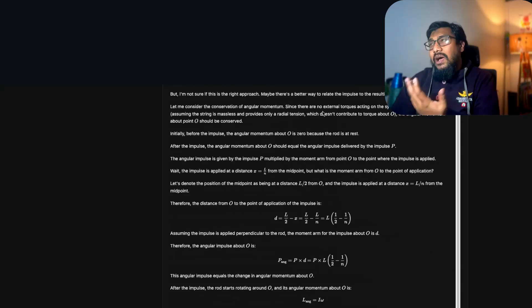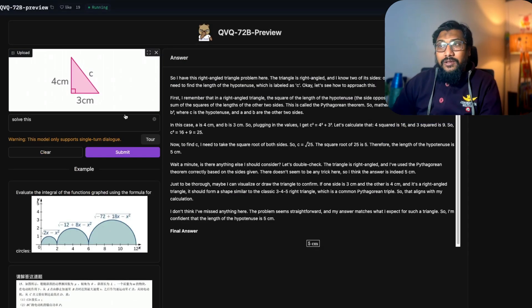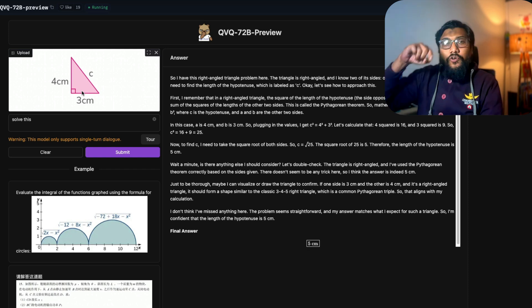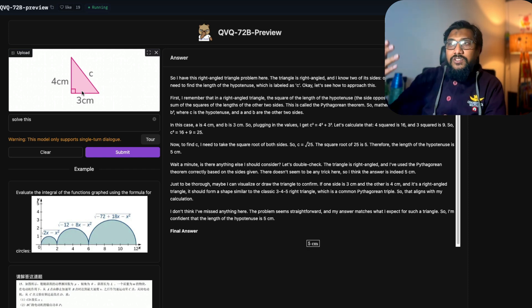I gave a very simpler problem next. This is a Pythagoras theorem. You've got a triangle, you've got 4 centimeters, 3 centimeters, and you have to figure out what is the c value. Which technically is equal to square root of 4 square plus 3 square, which is 4 square is 16, 16 plus 9 is 25, 25 square root is 5. So technically the answer should be 5.